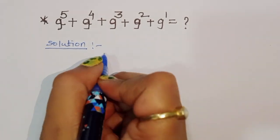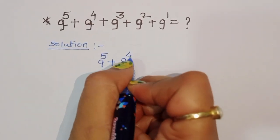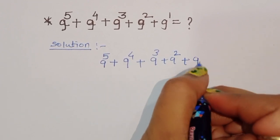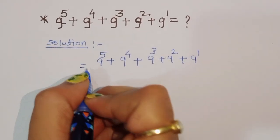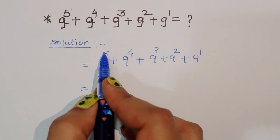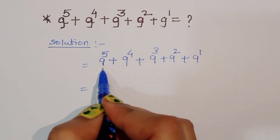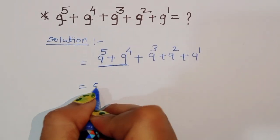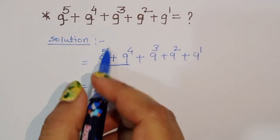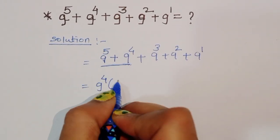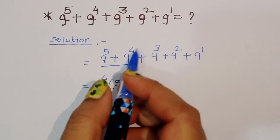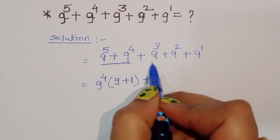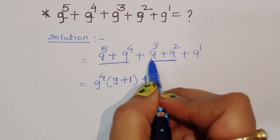What is given: 9 power 5 plus 9 power 4 plus 9 power 3 plus 9 power 2 plus 9 power 1. You can see here 9 power 5 and 9 power 4 — we can take 9 power 4 common. In the next term, 9 power 3 and 9 power 2, we can take 9 power 2 common.